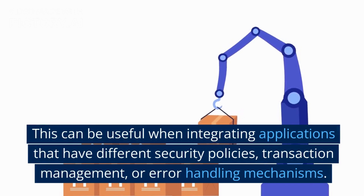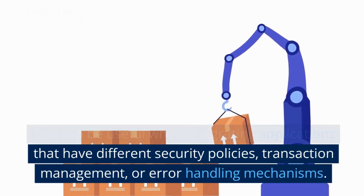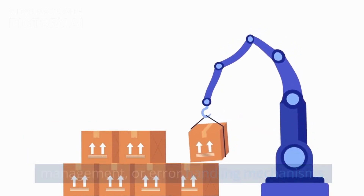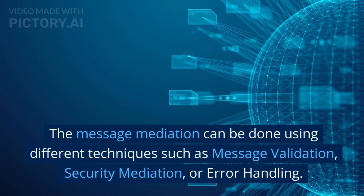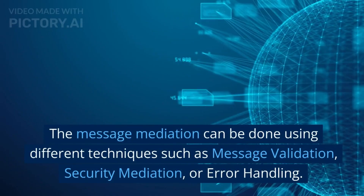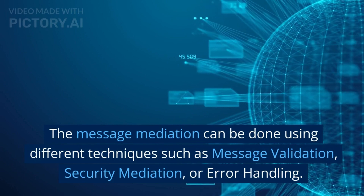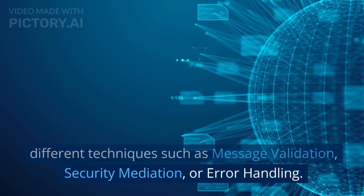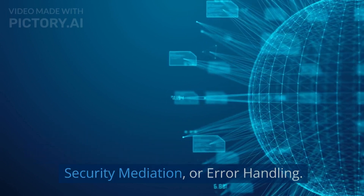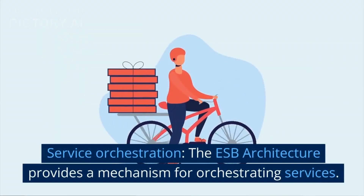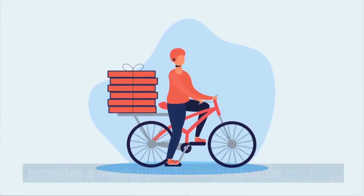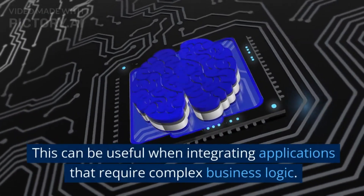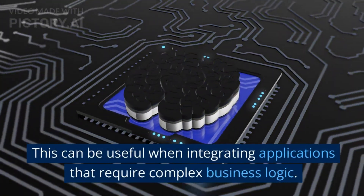Sixth, service orchestration. The ESB architecture provides a mechanism for orchestrating services. This can be useful when integrating applications that require complex business logic. The service orchestration can be done using different techniques such as Business Process Execution Language (BPEL), Business Process Model and Notation (BPMN), or Service Component Architecture (SCA).